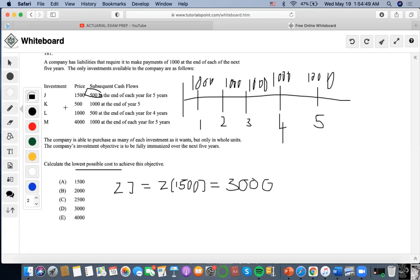Next one is K: 500, a thousand at the end of year five. That is just only a thousand for year five, that's taken care of. And for investment L, a thousand five hundred at the end of each year for four years.